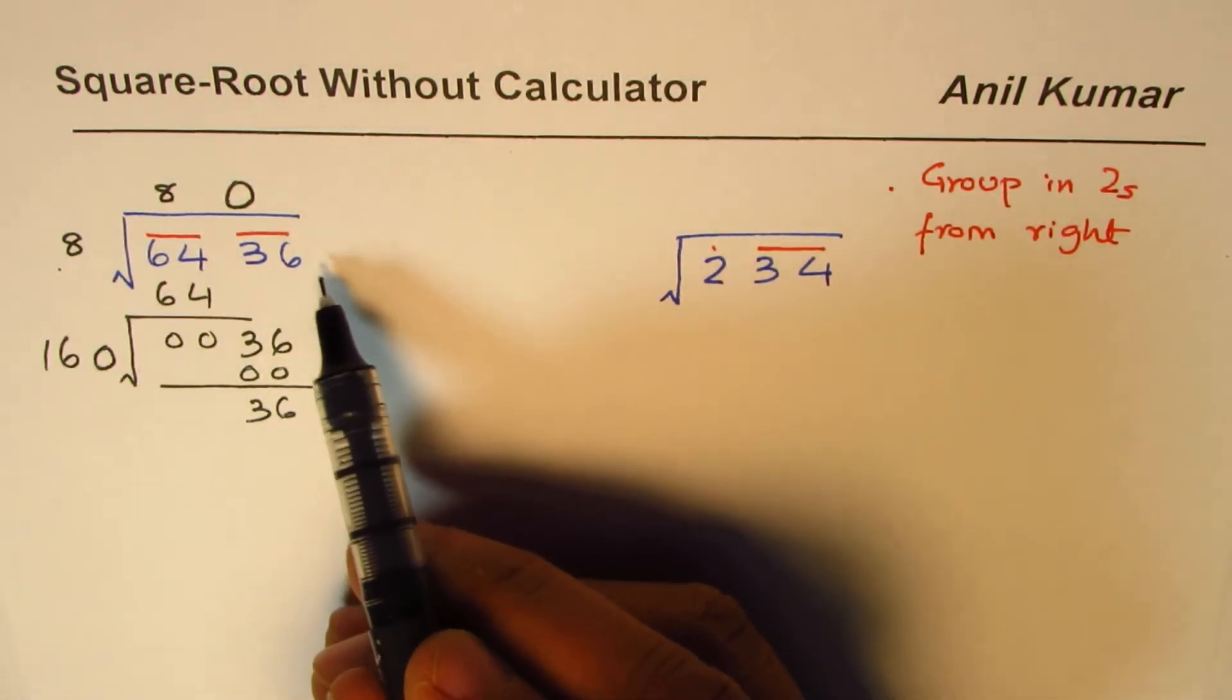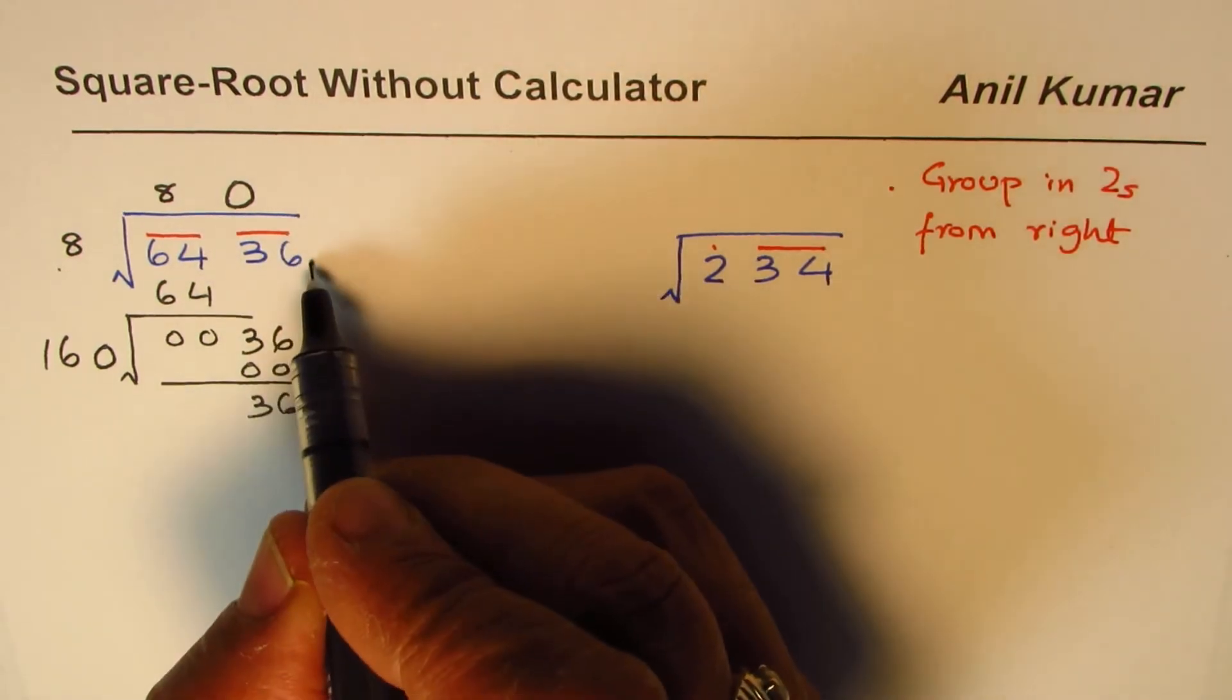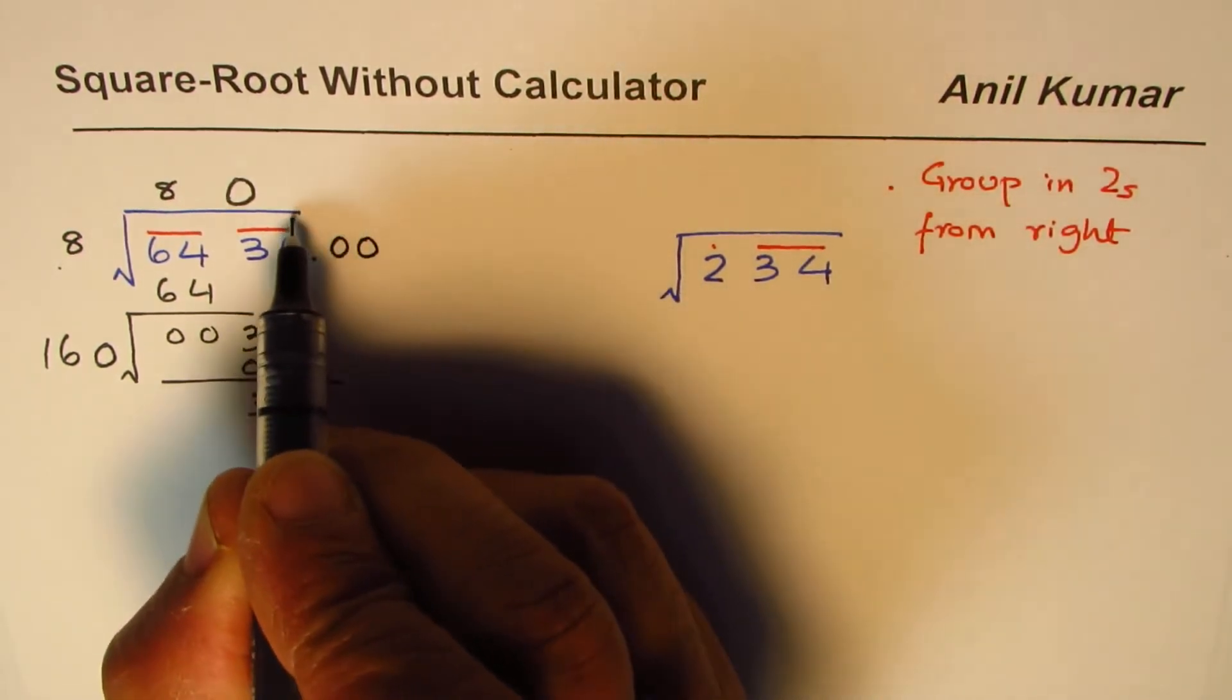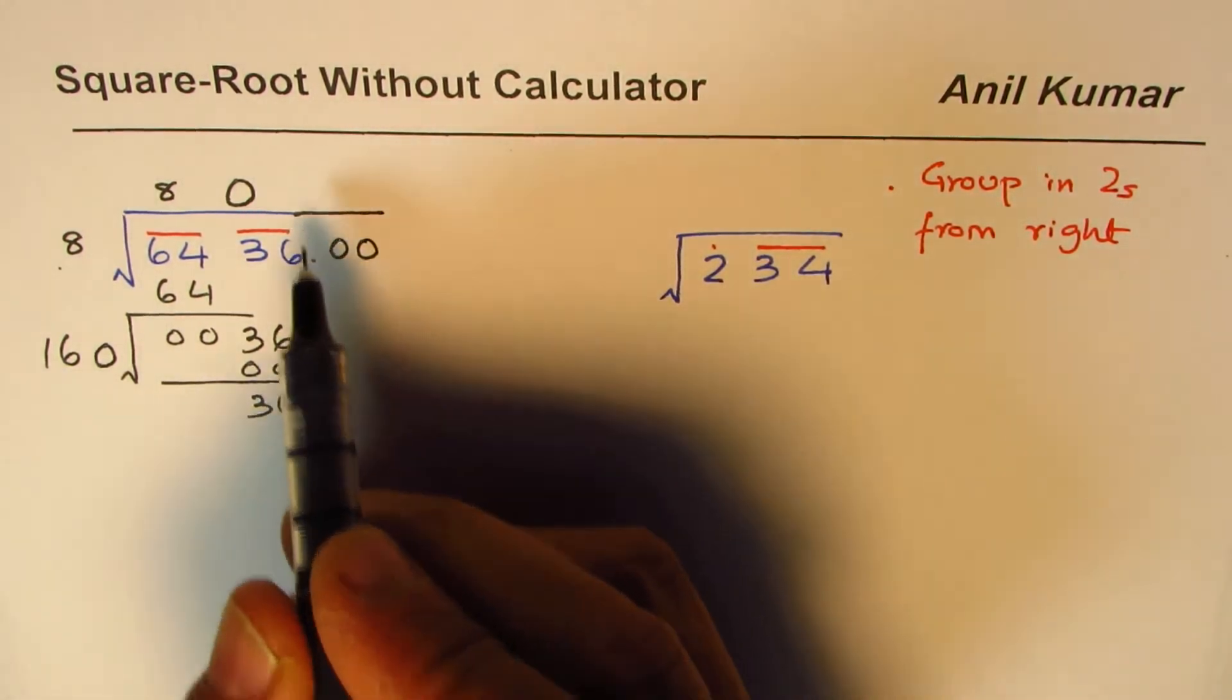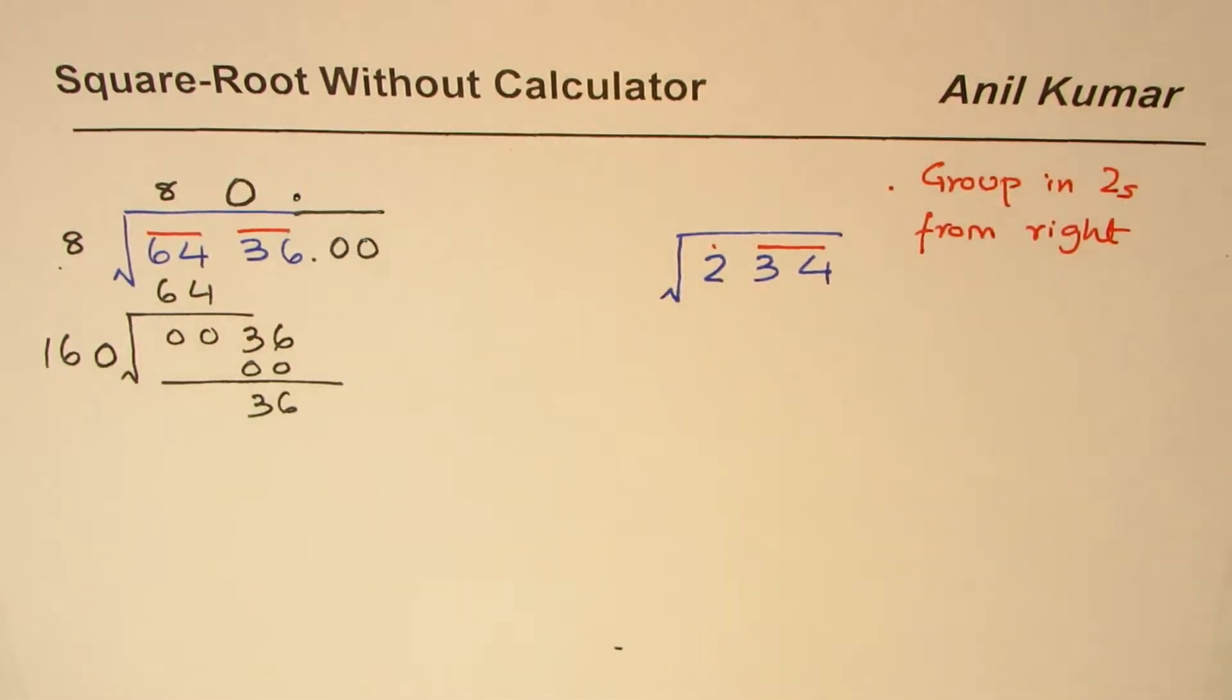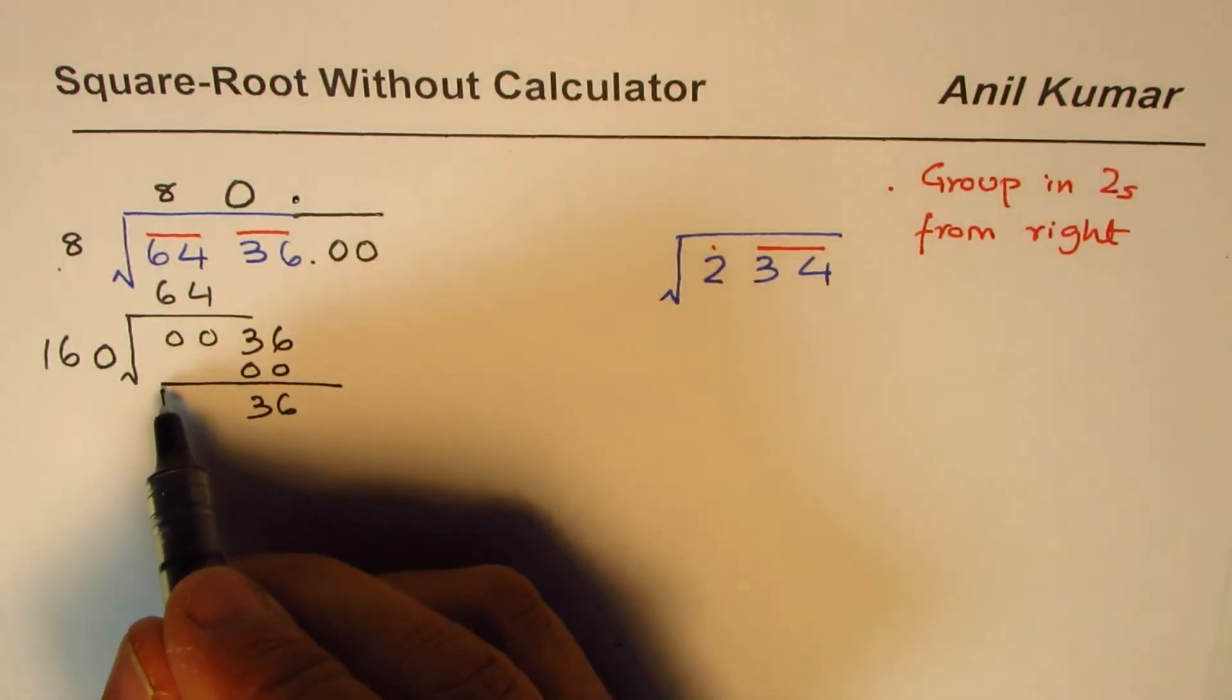Since we have no other numbers, we can always place a decimal and a set of two zeros and extend the process.